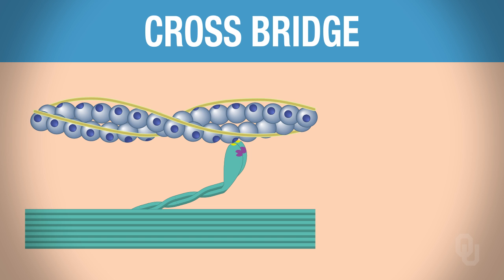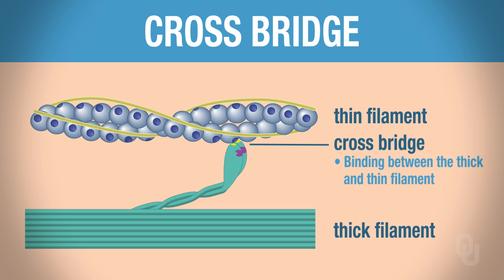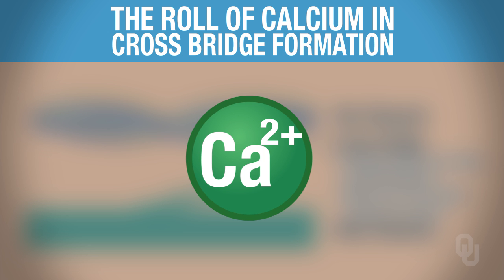This slide represents a crossbridge, so it's important to know what a crossbridge is. What you're looking at here is a thin filament, and the bottom myofilament is the thick filament. When these two filaments bind, we call this a crossbridge. Crossbridging has to occur in order for a skeletal muscle to contract.